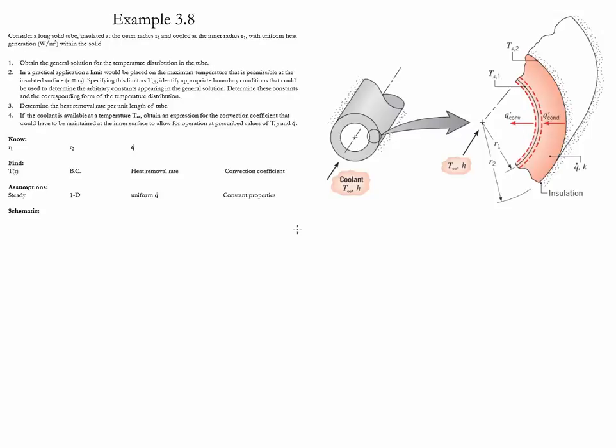The result of this equation gives us the temperature as a function of R. It is given as: T(R) = negative Q-dot R-squared over 4K, plus C1 times the natural log of R, plus C2. This completes the first task — the temperature distribution as a function of R.